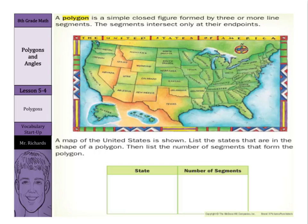Now what is a polygon? A polygon is a simple closed figure formed by three or more line segments. The segments intersect only at their endpoints.